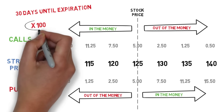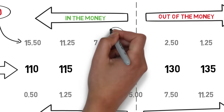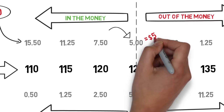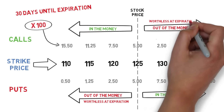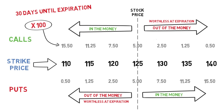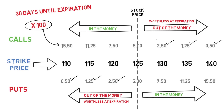Each option contract represents 100 shares of stock, so these prices have a multiplier of 100. For example, if you buy one contract of the $125 call, this will actually cost you $500, not $5. All out-of-the-money options have no value at expiration — if an option is out of the money at the expiration date, it will be worthless. The further out of the money an option is, the cheaper it is, because the likelihood of it being of any value is lower. For example, a stock is more likely to get to $130 than it is to $135.